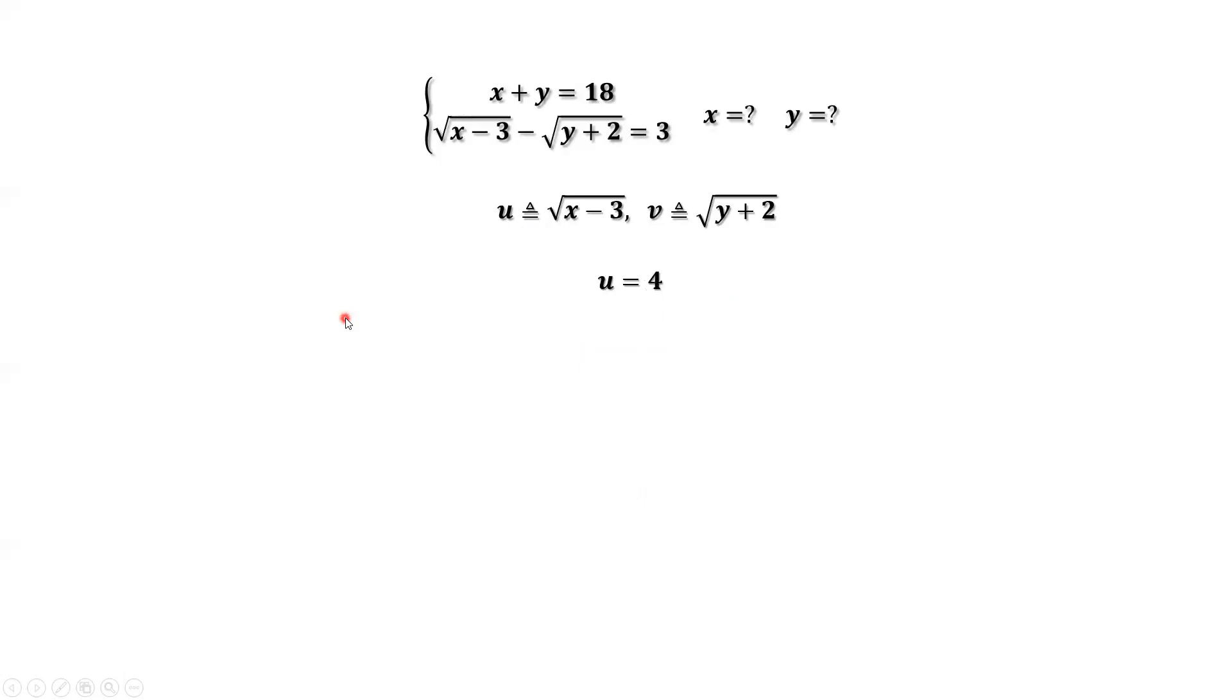u equals 4. What is v? Because u minus v equals 3, this implies v equals u minus 3. We replace u by 4, we have v equals 1.